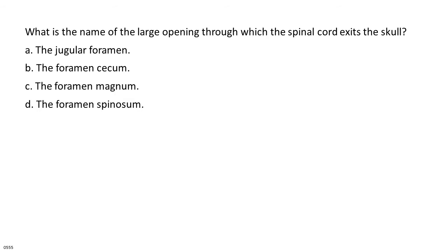What is the name of the large opening through which the spinal cord exits the skull? A. The jugular foramen. B. The foramen cecum. C. The foramen magnum. D. The foramen spinosum.